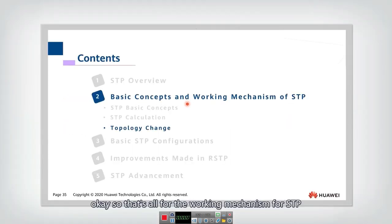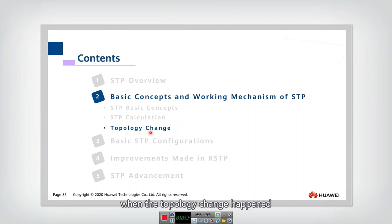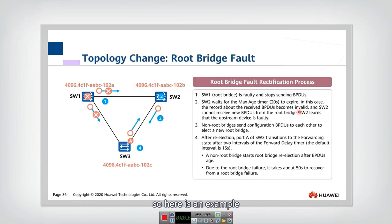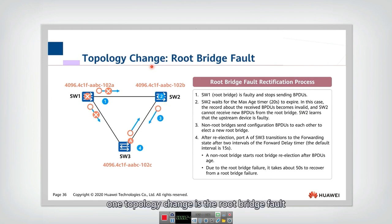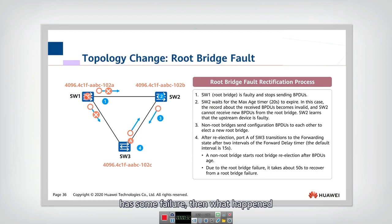That's all for the working mechanism of STP. Finally, let's look at another case: when a topology change happens, what should STP do? We have several different types of topology change. One topology change is the root-bridge fault. We'll assume that the root bridge has some failure — it can no longer transmit BPDUs.